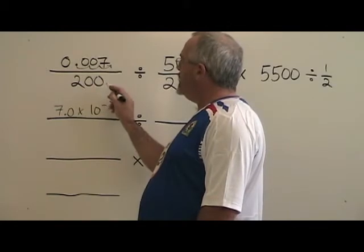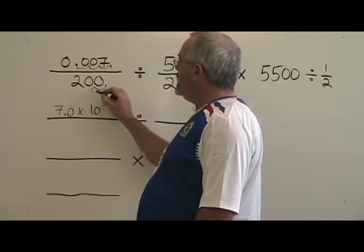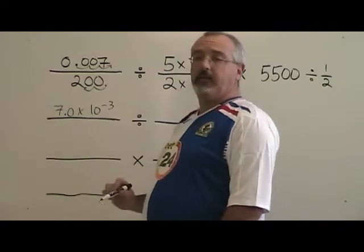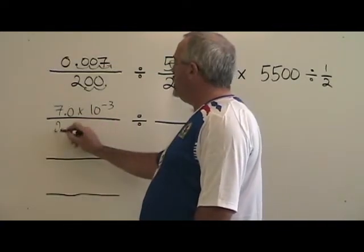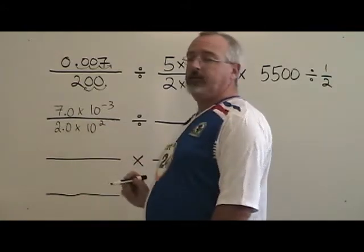With the 200, the decimal is here and I am moving it 1, 2 spaces to the left. So it becomes 2.0 times 10 to the positive 2.